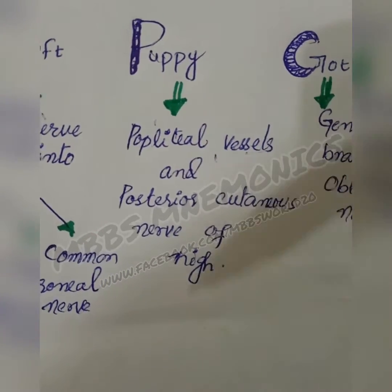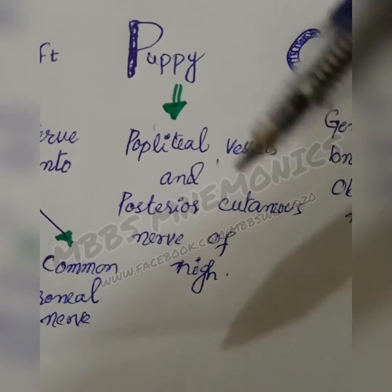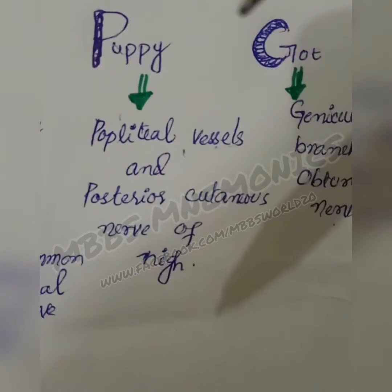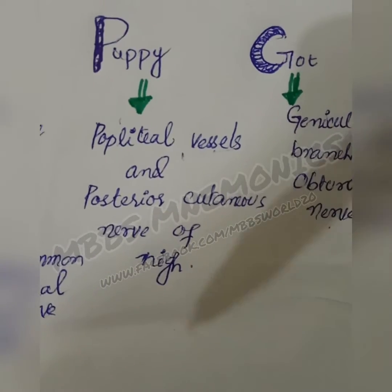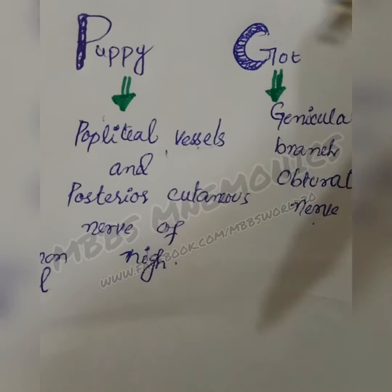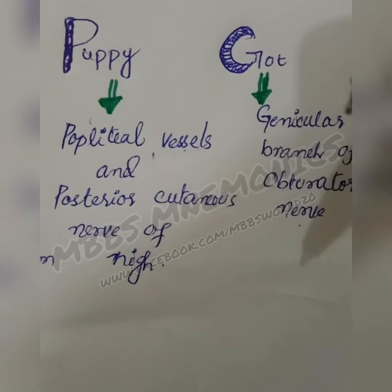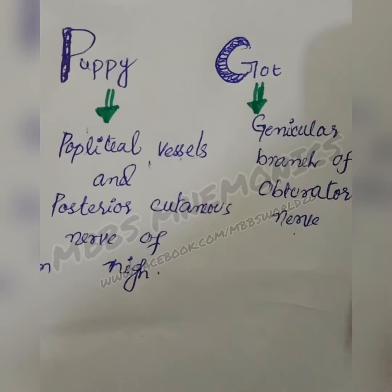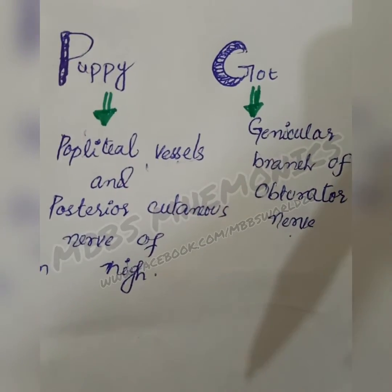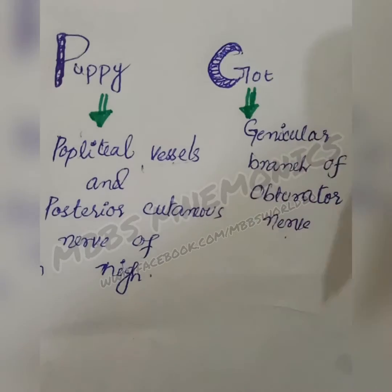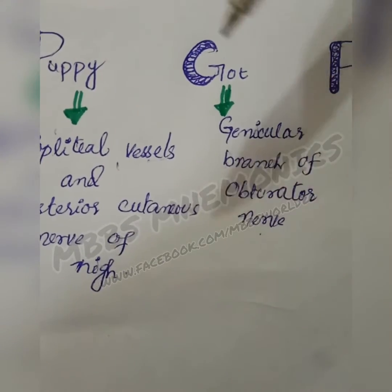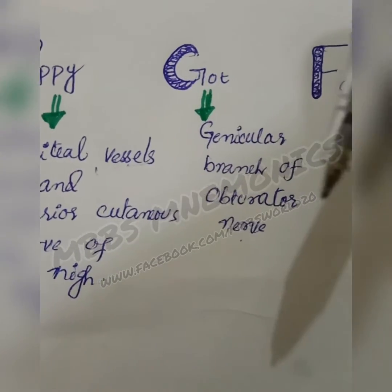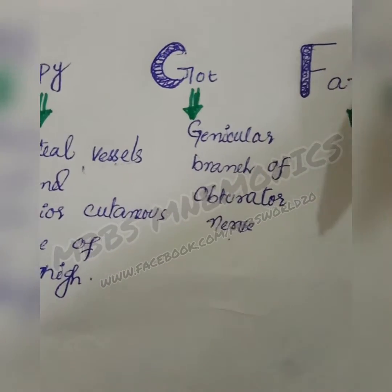The popliteal vessels include the popliteal artery, which is a continuation of the femoral artery, and the popliteal vein, which is formed by the venae comitantes of the anterior and posterior tibial veins.